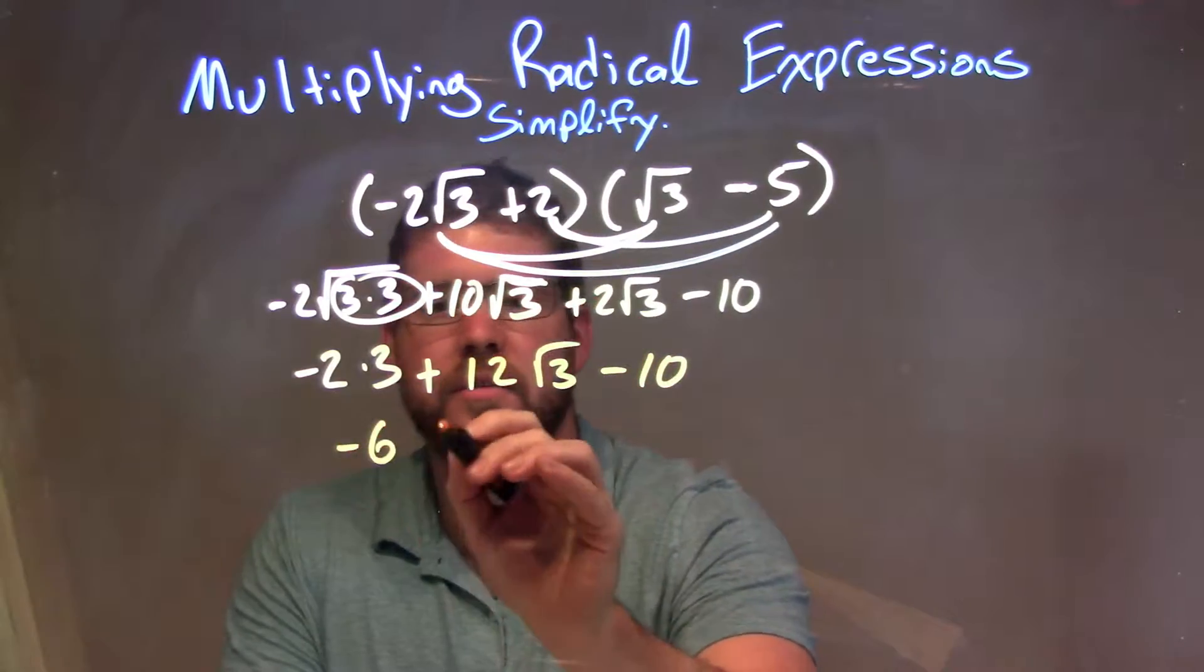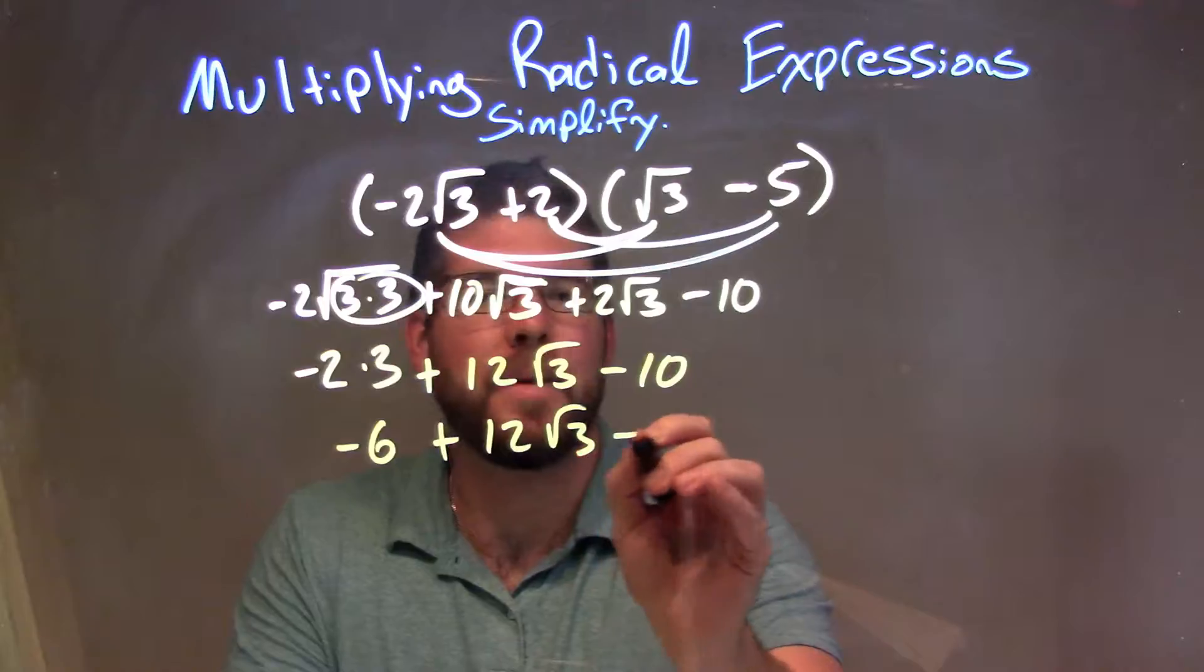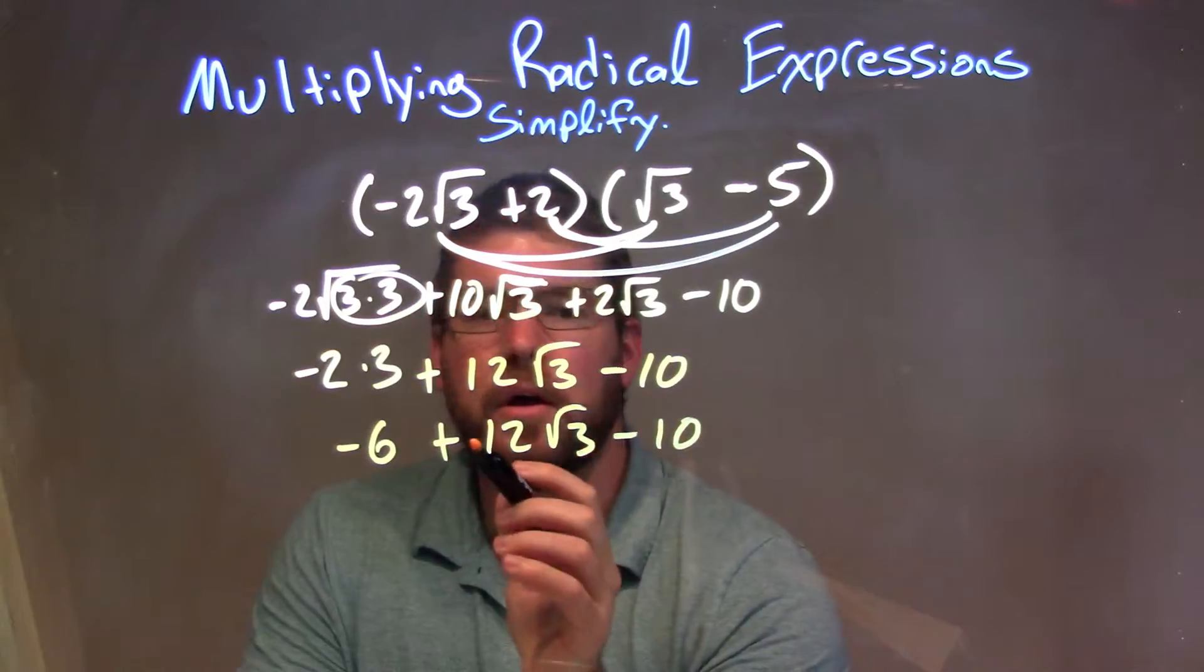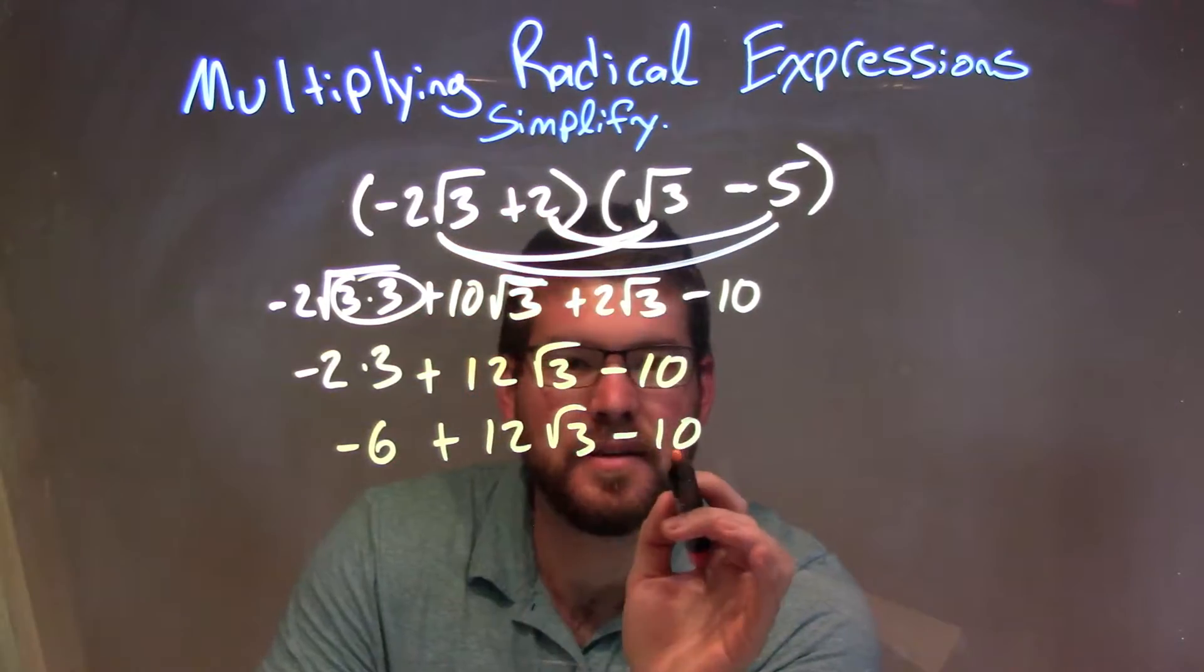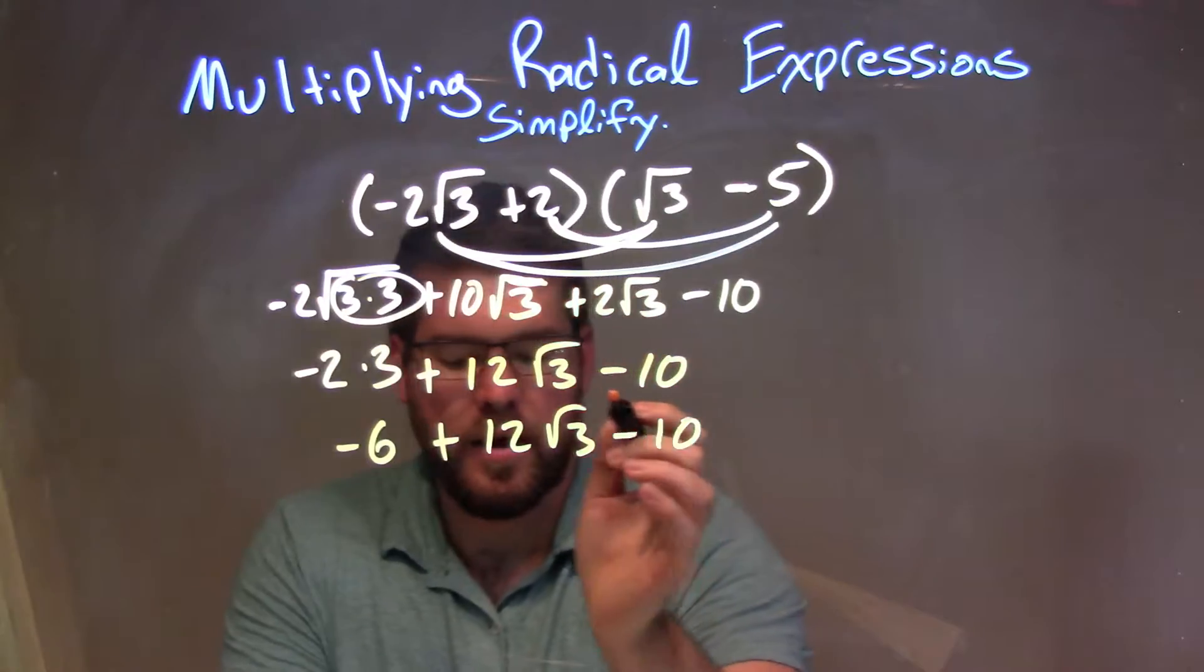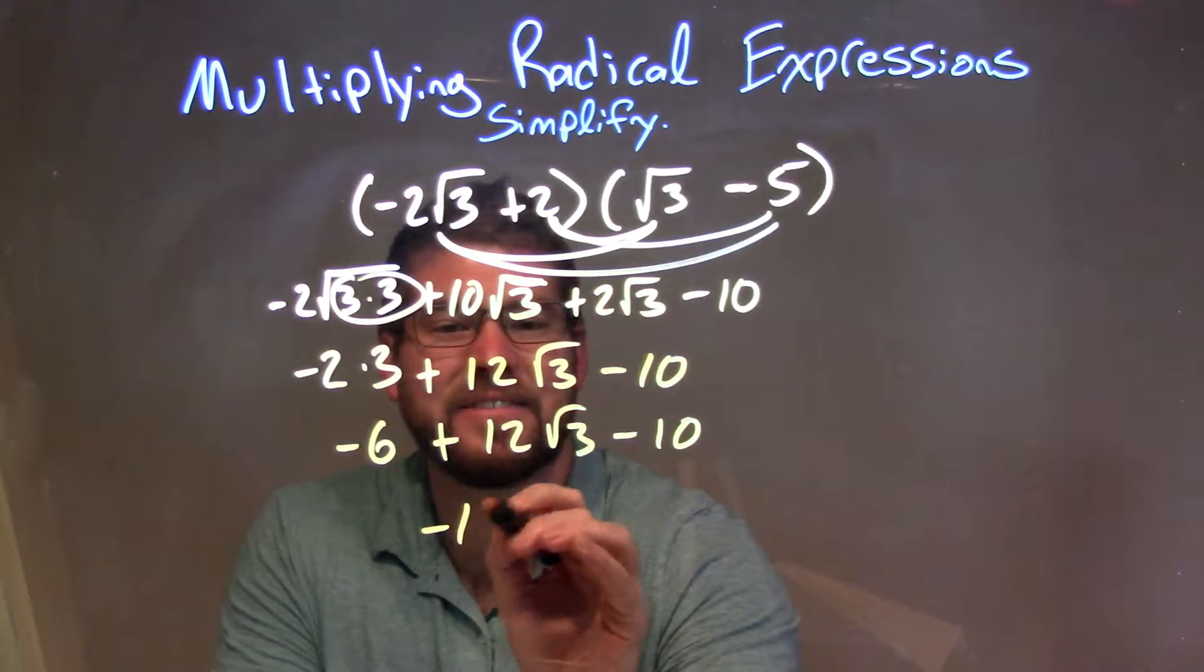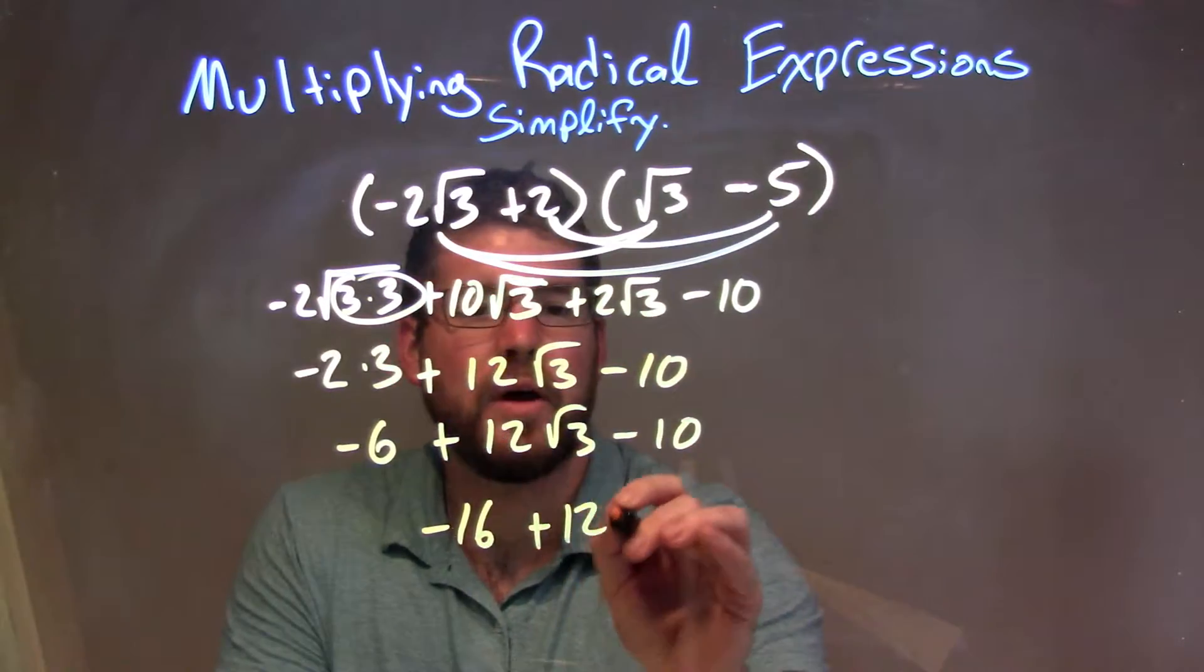Negative 2 times 3 is a negative 6 plus 12 square root of 3 minus 10. Well, now let's go and look. We have negative 6 and a minus 10 here. Negative 6 and minus 10 come out to be a negative 16 plus 12 square root of 3.